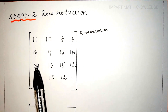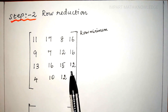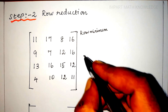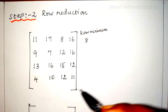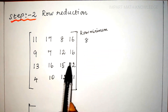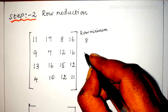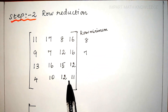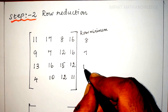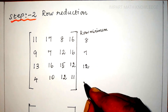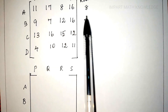Step 2 is row reduction. Identify the least element from each row and subtract it from all the elements in that row. In the first row, the minimum number is 8. In the second row, the minimum number is 7. In the third row, the minimum number is 12. In the fourth row, the minimum number is 4.